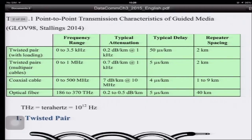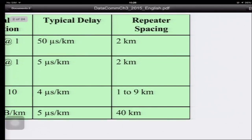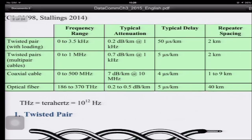Optical fiber has the lowest attenuation among guided media, while coaxial cable has the highest. However, twisted pair operates at a much lower frequency than coaxial cable. For repeater spacing, optical fiber requires the fewest repeaters — about every 40 kilometers — because it maintains signal strength over long distances. Twisted pair requires repeaters every 2 kilometers, and coaxial cable every 1 to 9 kilometers.